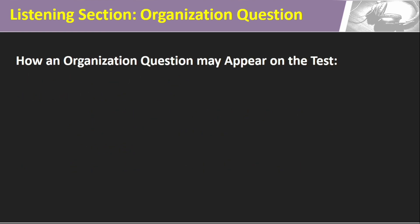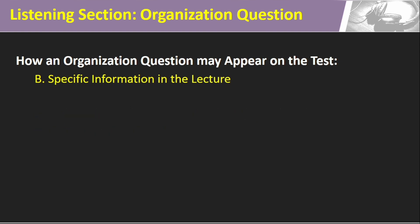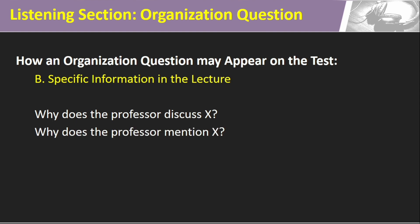Understanding Organization Questions have two basic formats. First, they may ask about the organization of the material in the professor's lecture, appearing like: 'How does the professor organize the information about X that he presents to the class?' or 'How is the discussion organized?' Other understanding organization questions ask about specific information in the lecture — why the professor discussed or mentioned certain pieces of information — such as 'Why does the professor discuss X?' or 'Why does the professor mention X?'